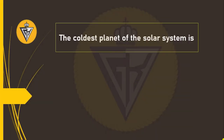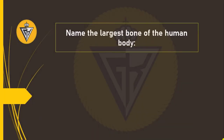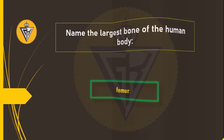The coldest planet of the solar system is Pluto. Name the largest bone of the human body — femur.